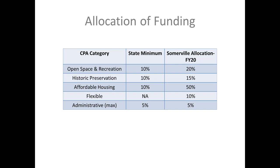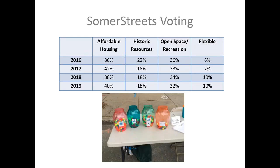Up to 5% can be spent on administration or operating expenses, including consultancies, staff salary, and meeting needs. The Community Preservation Committee takes community feedback very seriously, going out to the streets every year through summer events and festivals where they put out jars and ask the public to allocate tokens across the four categories. The allocations seen are pretty consistent across the years. Last year, people thought 40% should go to affordable housing, 18% to historic resources, 32% to open space and recreation, and 10% to be flexible.